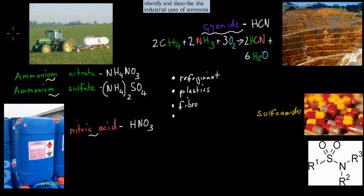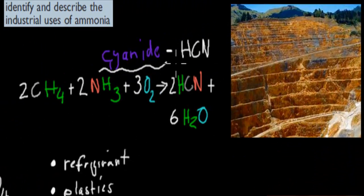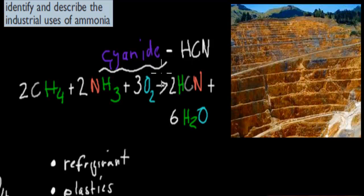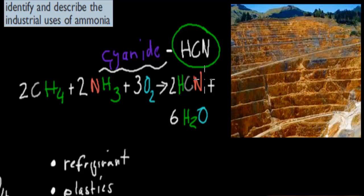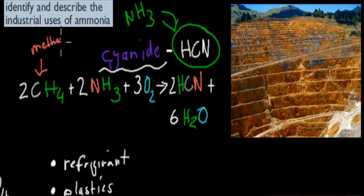For example, cyanide. Cyanide, the actual formula is HCN. Now you might think, how is ammonia involved when it comes to cyanide production? There's no NH3 in cyanide itself. Well, this is the actual equation to make cyanide, and we have CH4, which is methane. You don't need to remember this equation, by the way. I'm just showing you how ammonia plays a role. We've got methane and ammonia and oxygen. These three react together to form water and, importantly, cyanide.